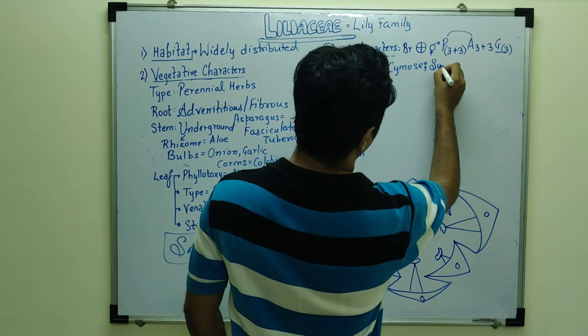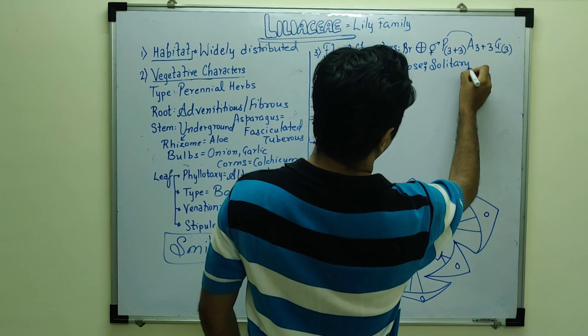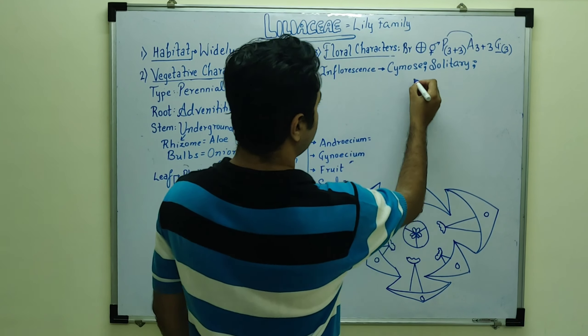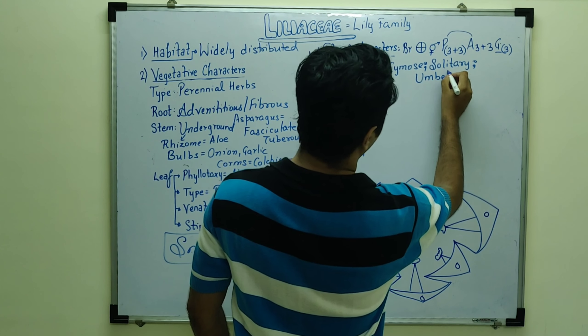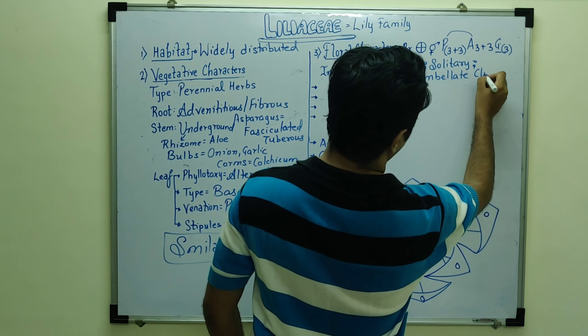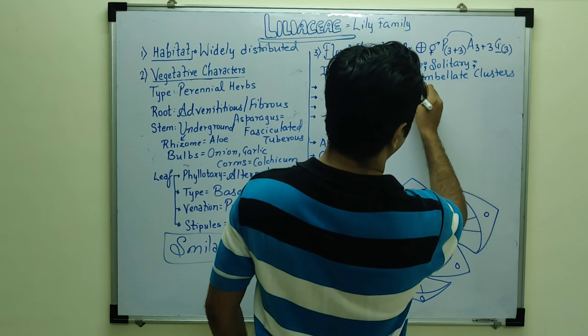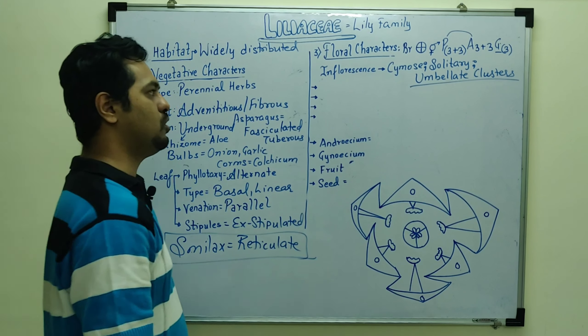Inflorescence, we can see inflorescence. That is cymose inflorescence mainly. Could be solitary flower as well. But mainly cymose inflorescence or they are often present as umbellate clusters.